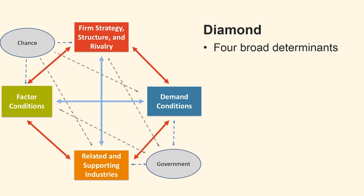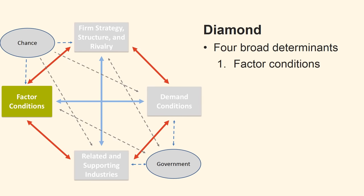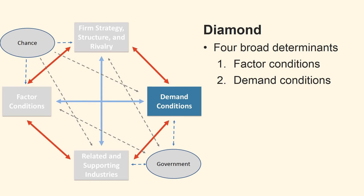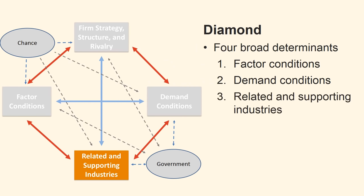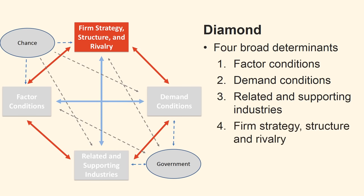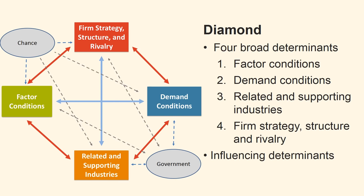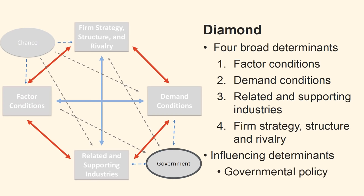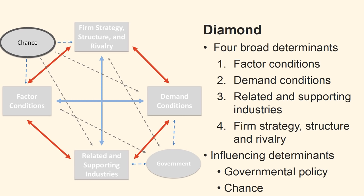In Porter's Diamond Model there are four broad determinants responsible for such diversity. They mark the playing field for the nation's industries. These determinants are Factor Conditions, Demand Conditions, Related and Supporting Industries, and Firm Strategy, Structure and Rivalry. The model also points out that there are two additional determinants that influence the four main determinants. These are Governmental Policy and the Role of Chance Events.